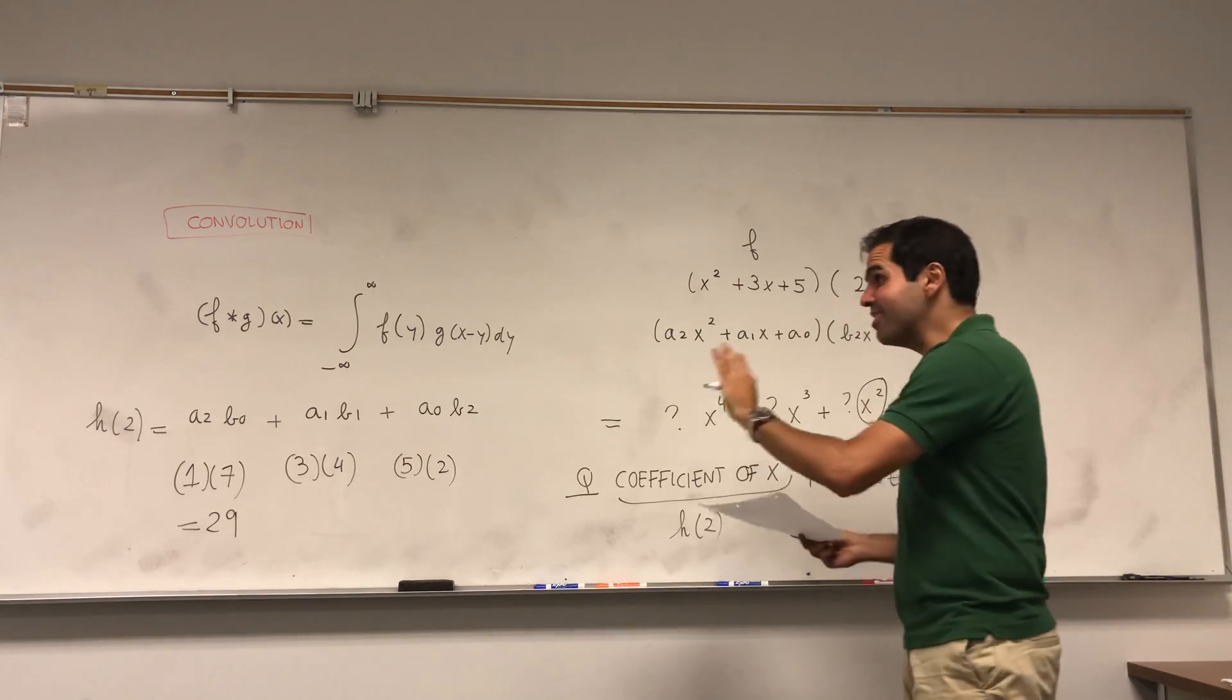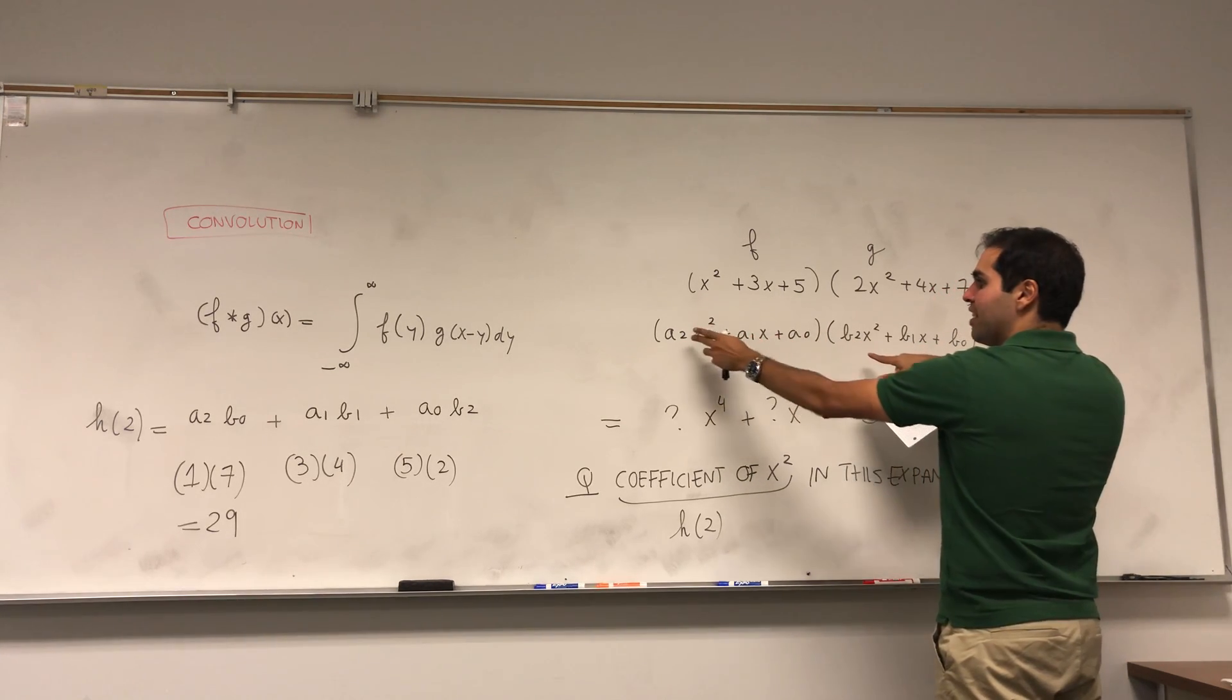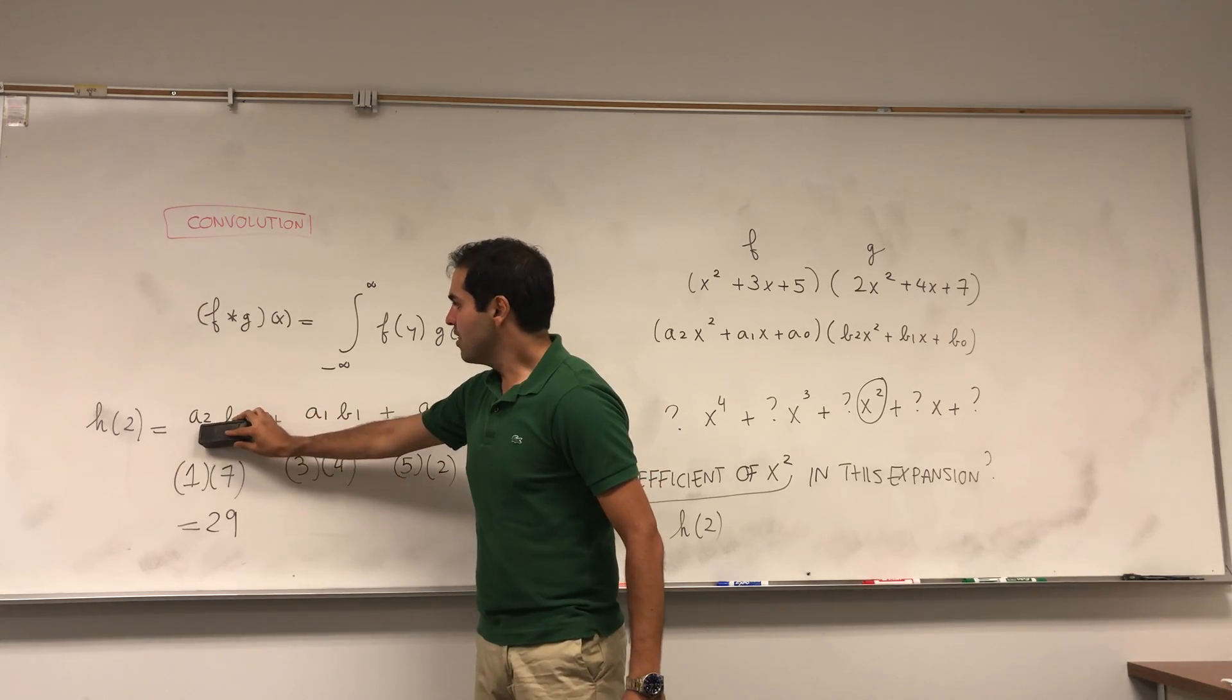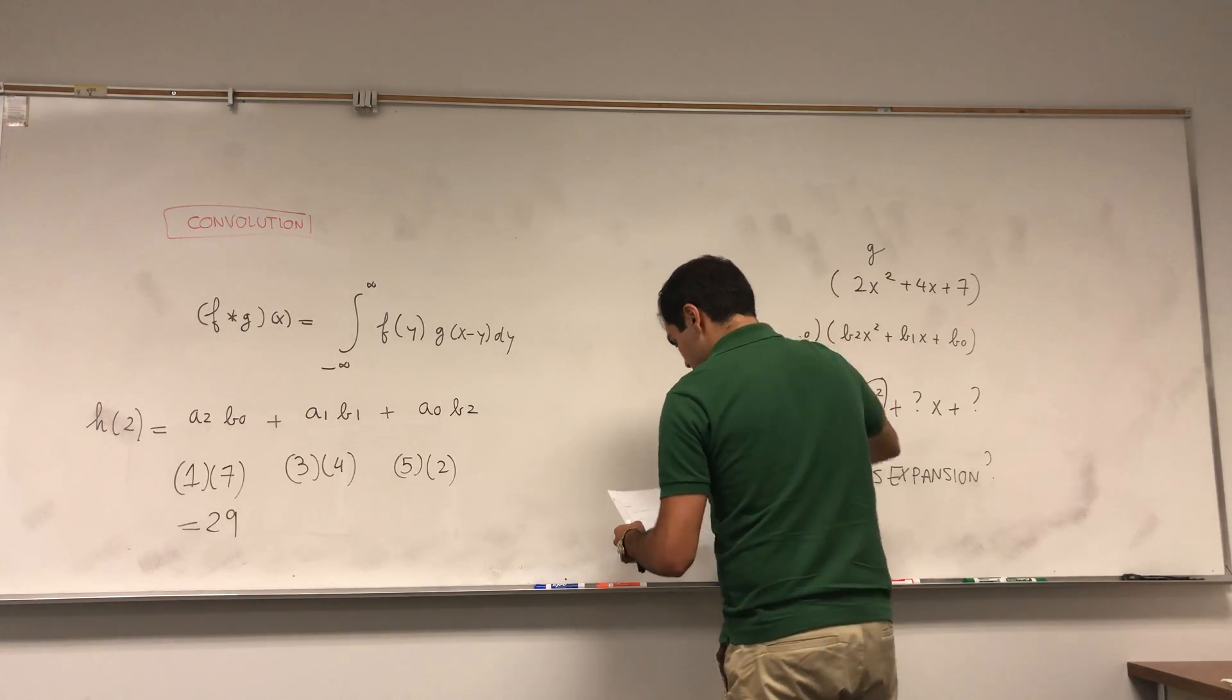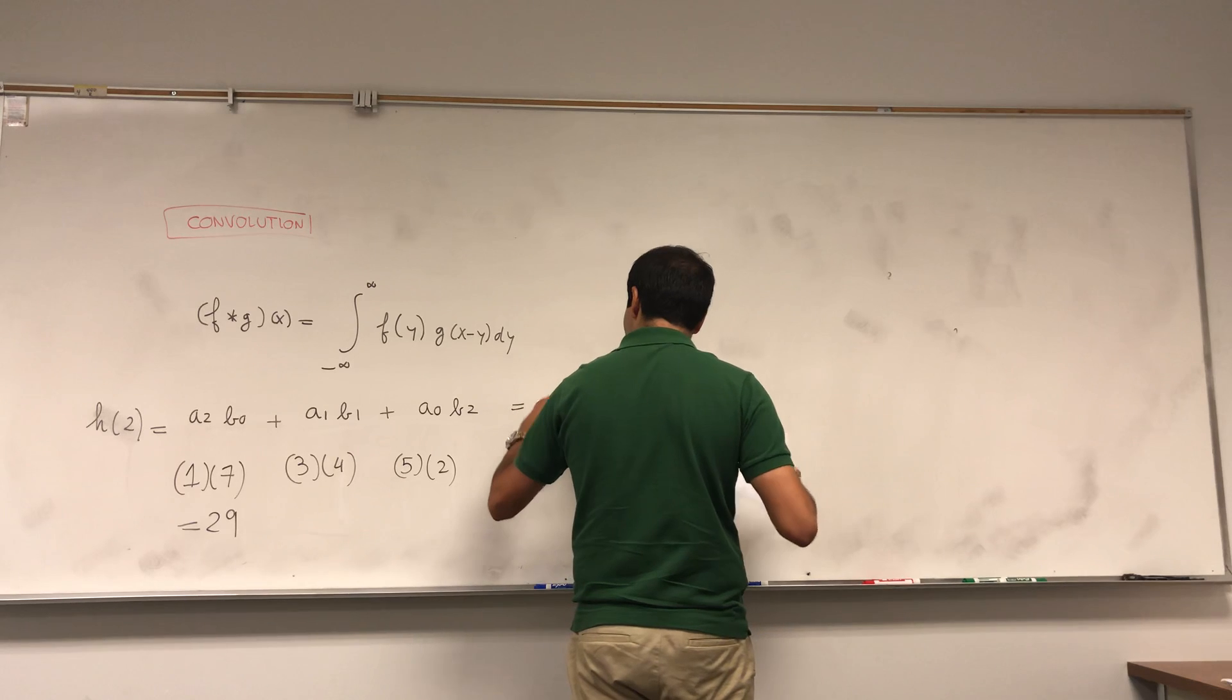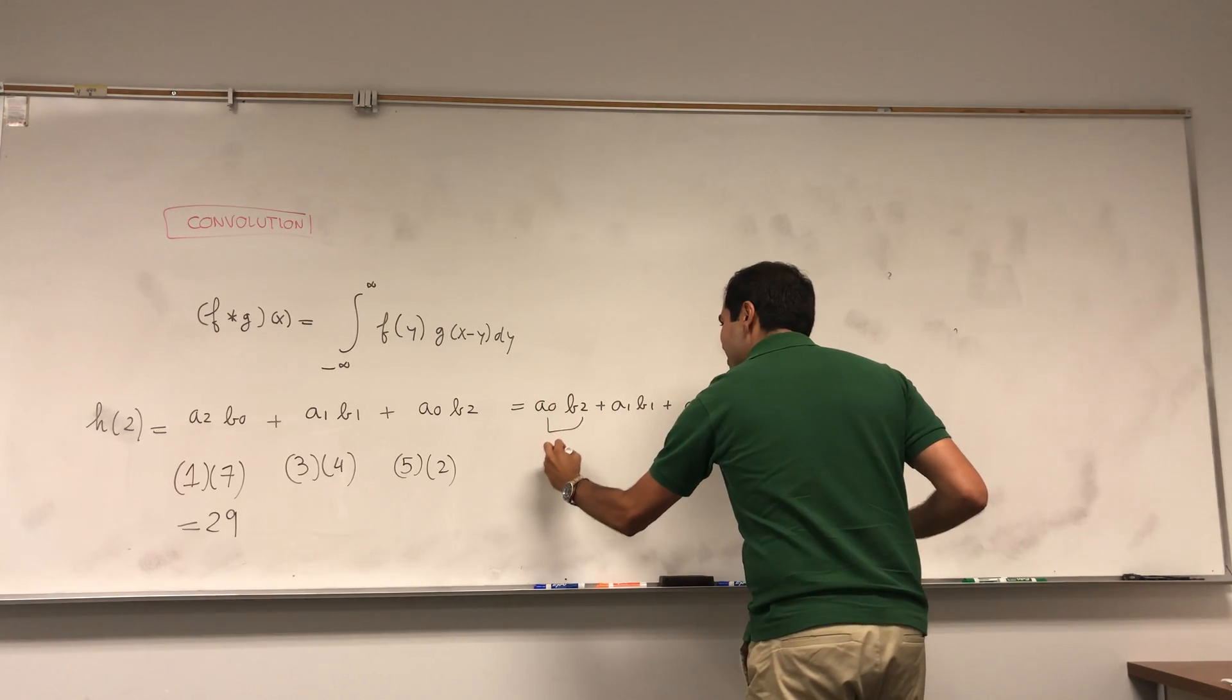But the result is not important. What's important is the process. Notice what we did: we took the coefficient of f times the coefficient of g so that if you want the sum of the powers equals 2. More importantly, notice in this multiplication, the sums of the indices has to equal 2. So really, what h(2) is is just—and again, maybe you can rewrite this in more suggestive notation: a₀b₂ + a₁b₁ + a₂b₀. Again, the sum of the two always has to be 2.